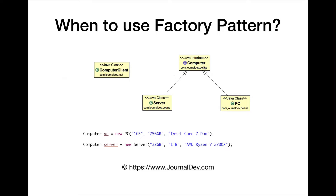When should you use factory pattern? When you have a super class and multiple implementations of it — for example, a computer interface with two implementations: Server and PC. A computer client that wants to instantiate Server and PC objects has to use their constructors directly, such as 'new PC' with all the arguments to get a PC instance. The same goes for instantiating a Server object.